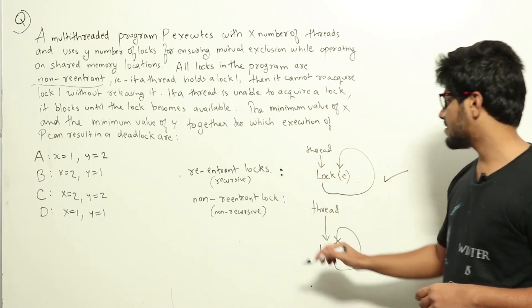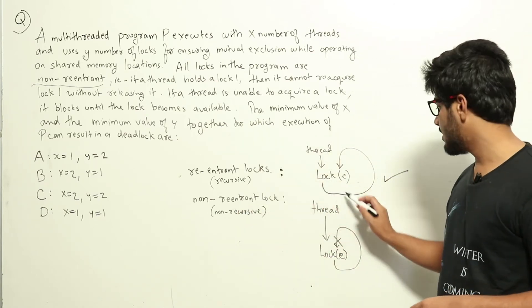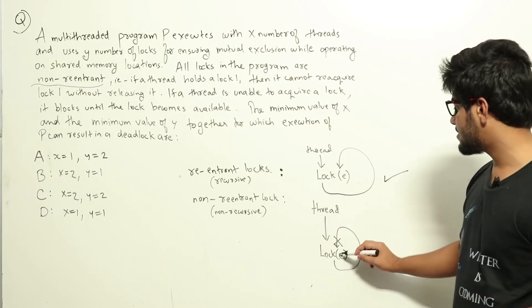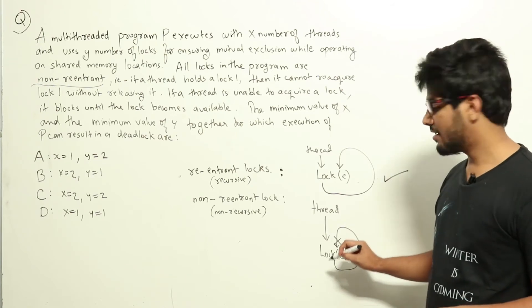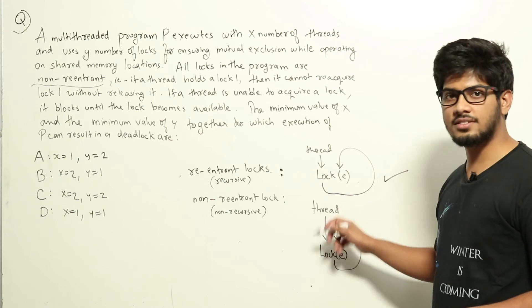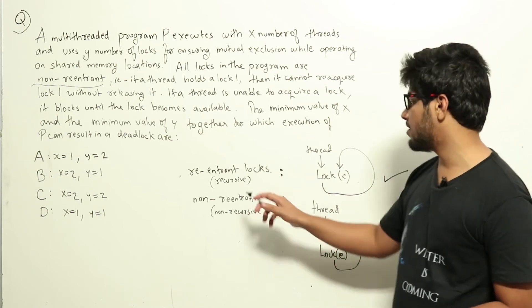The property here is that consider a thread that is executing. It acquires the lock E which is non-reentrant. If it keeps on executing and tries to acquire the lock again, now it will block here. So this lock is already with the thread but still it will block here because it is a non-reentrant lock.